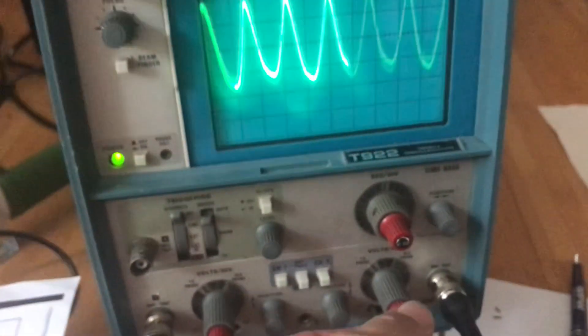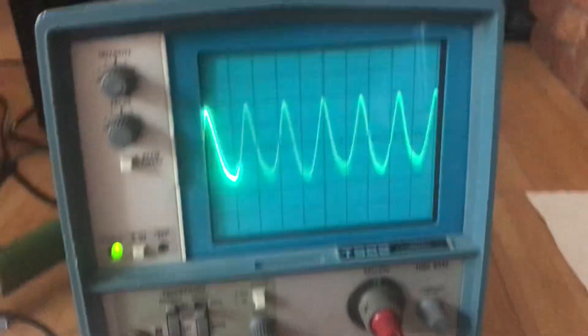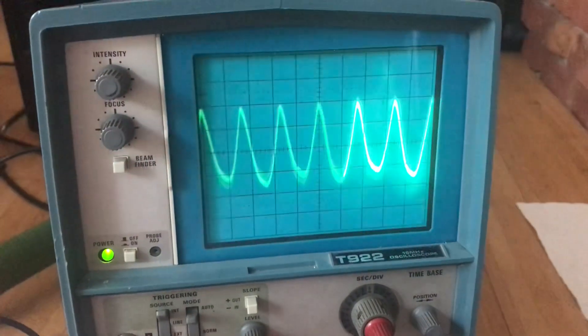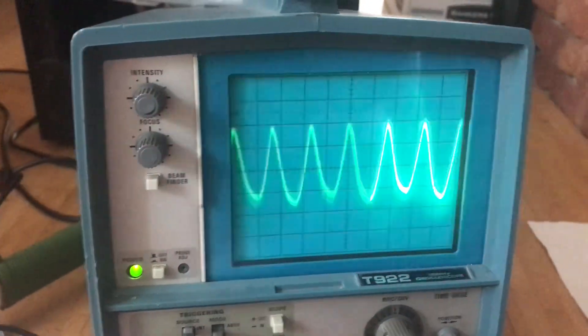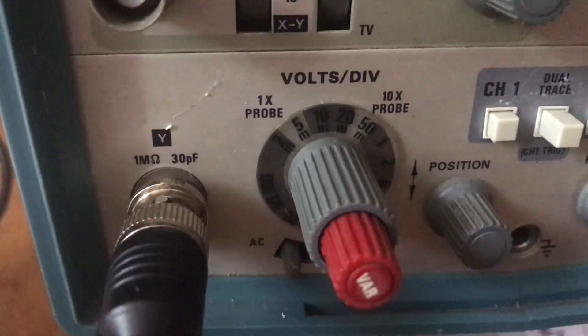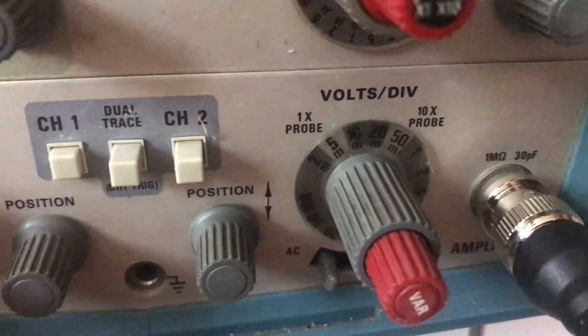Just as a reality check, let's make sure these one times ten times are all back to normal. Five millivolts per division, five millivolts per division.